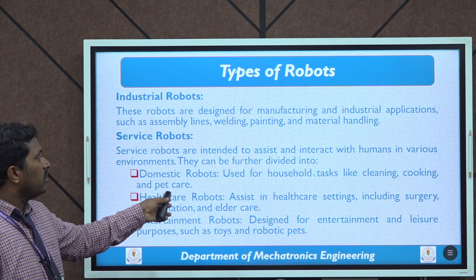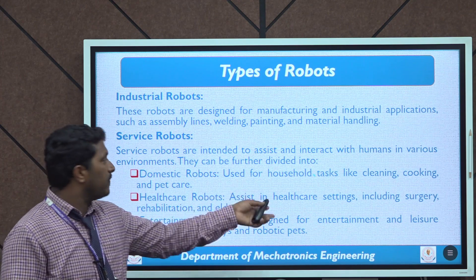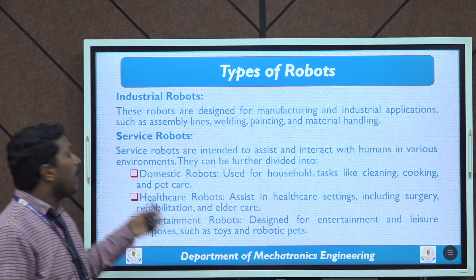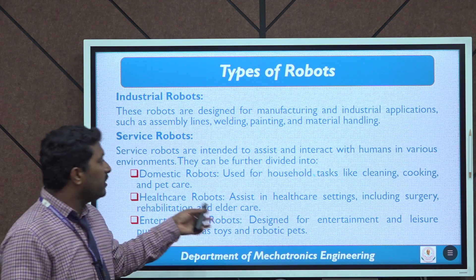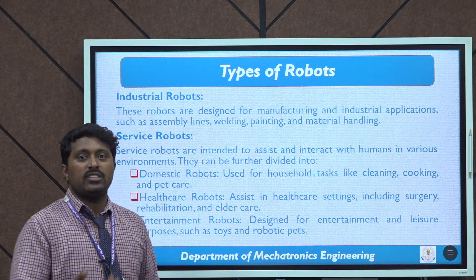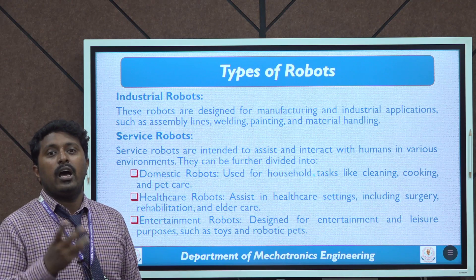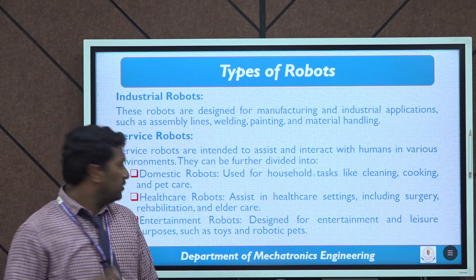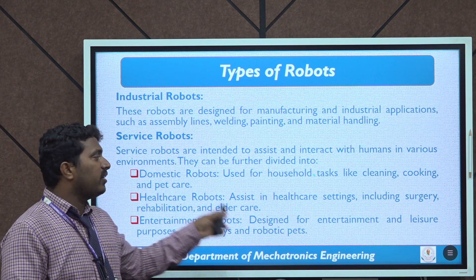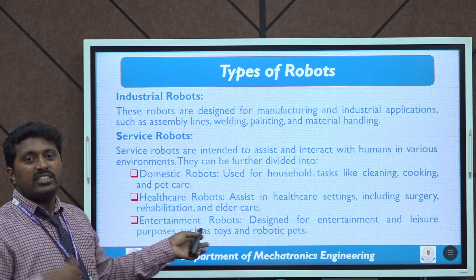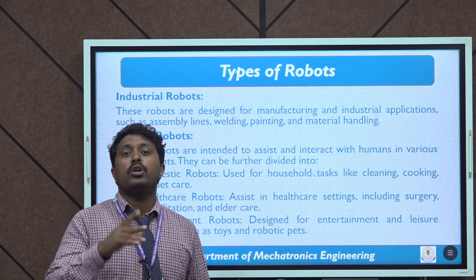Service robots include domestic robots, used in household applications like cleaning, cooking, and elder care. Next are healthcare robots, used in the medical industry and surgery to assist doctors and medical workers. Third are entertainment robots, purely designed for entertainment purposes — toys and robotic pets are examples.